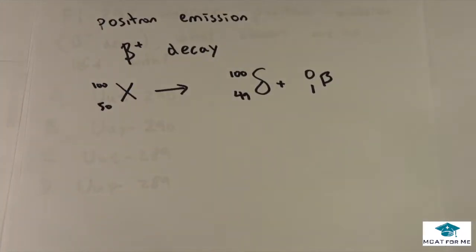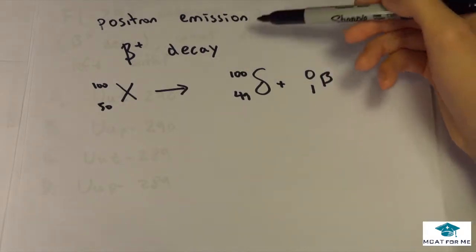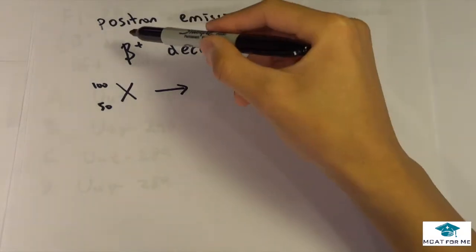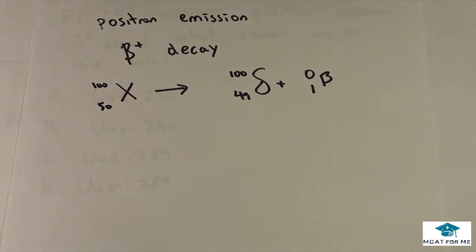The first thing to notice is that positron emission is the same thing as beta decay, beta positive, because remember there's a beta negative which is electron emission. It follows this basic equation.